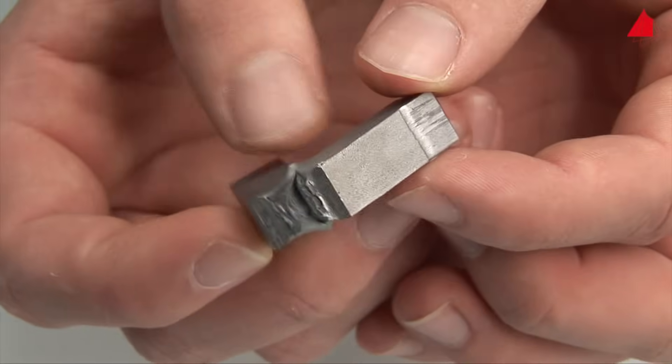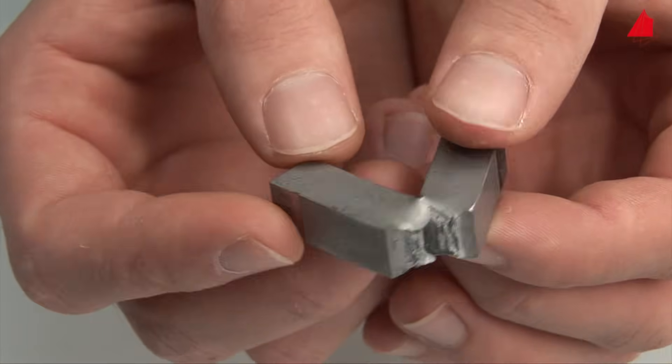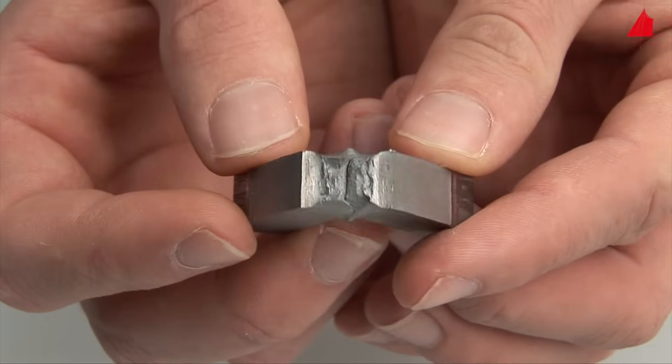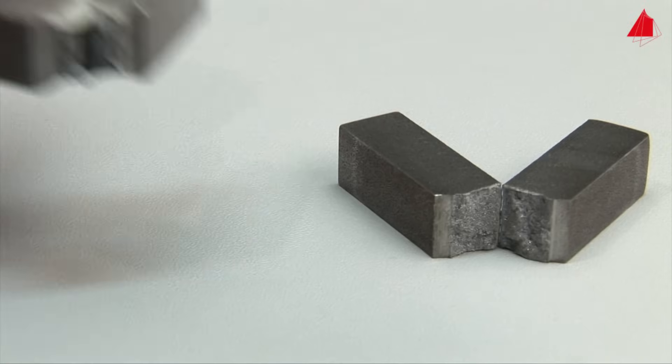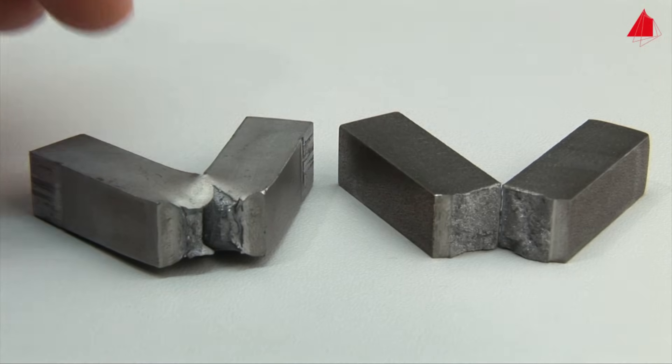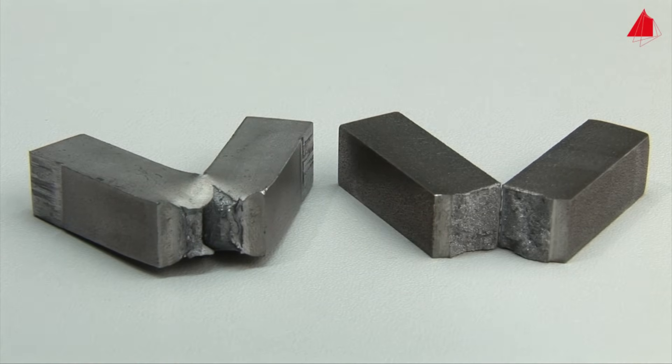Here the specimen did not break into two pieces. Instead it was pushed through the counter bearings under heavy plastic deformation. In comparison with the strain aged steel, the normalised steel absorbs much more notch impact energy and behaves in a very tough manner.